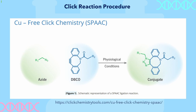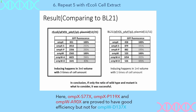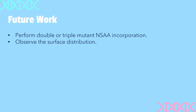Next up is the cell-free protein synthesis (CFPS) procedure, where we induced orthogonal aminoacyl-tRNA synthetase or orthogonal tRNA pairs to functionalize the NSA incorporation. As we can see in our second case, CFPS with 100 micromolar concentration shows an efficiency of 62%. We then used click chemistry — a technology used to label biomarkers — to measure the efficacy of our procedure. From our first incubation we observed that the labeling was strong enough in OmpXS, OmpXP, OmpW, and OmpWA, whereas OmpWD does not show any labeling effect, possibly indicating that the NSA incorporation did not work in that case. We can confirm that OmpXS77X, OmpXP119X, and OmpWA90X have been proved for good efficiency, but not for OmpWD137X. Our future work is to perform double or triple mutant NSA incorporation and observe the surface distribution. Thank you.